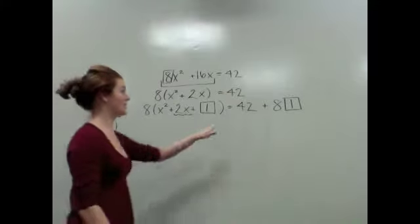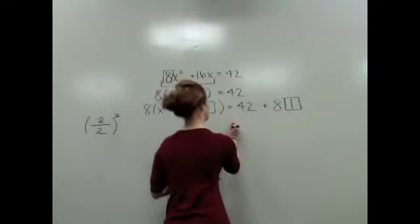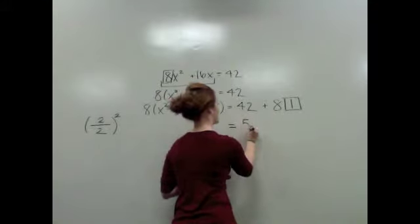So over here, I have 42 plus 8 times 1. Well, 42 plus 8 times 1, well that would be 50.